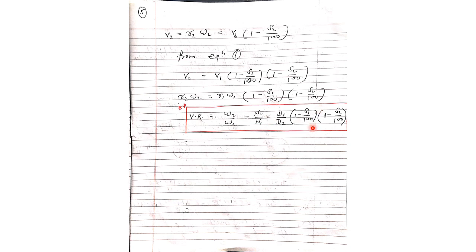If slipping occurs at the driver pulley only, then S2 equals 0, and the formula becomes N2/N1 equals D1/D2 times (1 minus S1/100). If slipping occurs at the driven pulley only, then S1 equals 0, and the formula becomes N2/N1 equals D1/D2 times (1 minus S2/100).